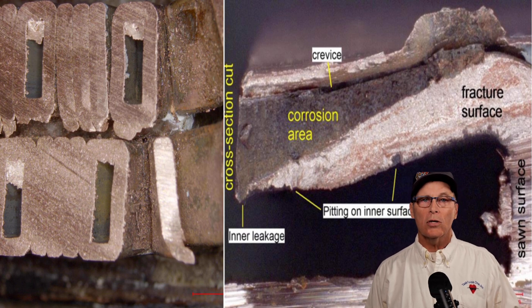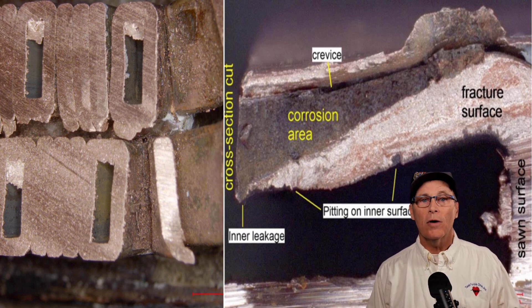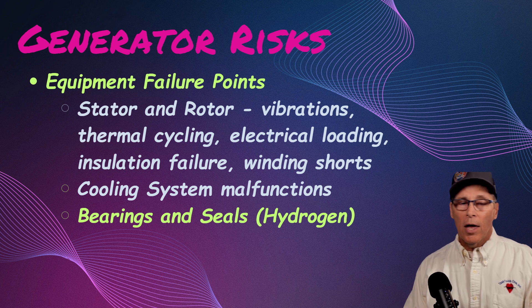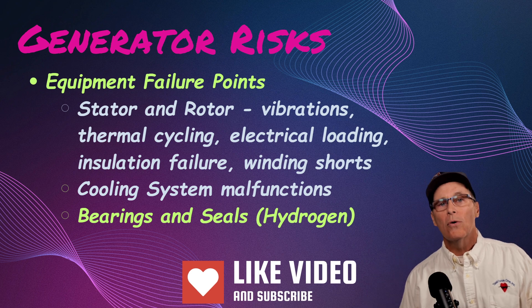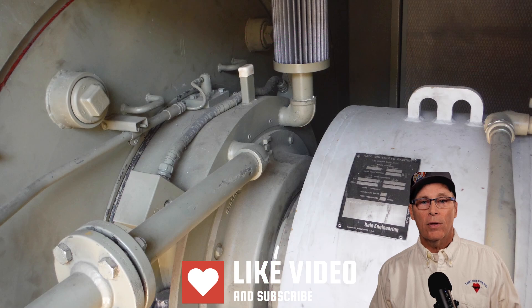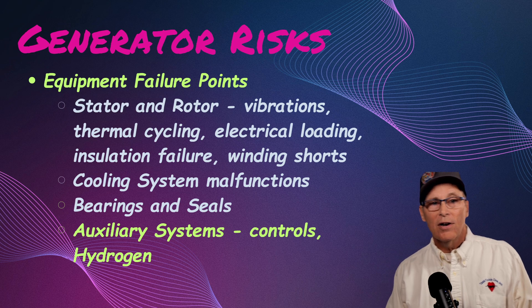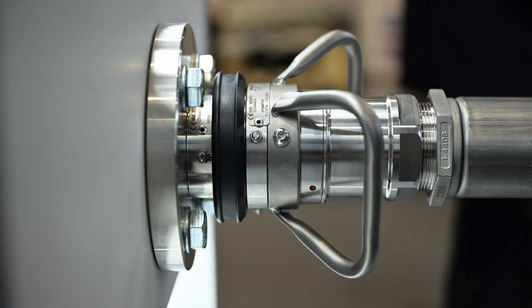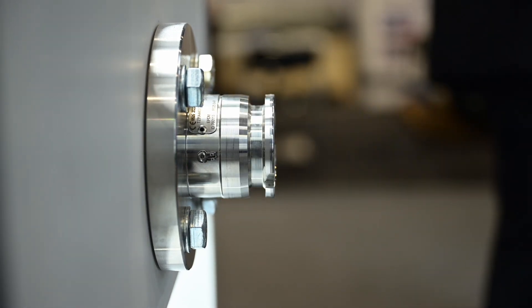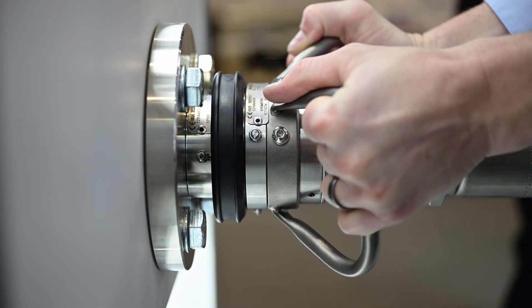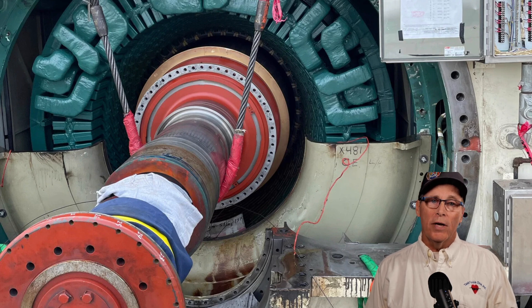Here's a close-up of the inside of stator bars from an investigation where we had hydrogen leaking due to crevice corrosion cracking. Remember — we have hydrogen in these machines, so we have to keep that seal oil flowing or we risk a fire. This is a close-up of the bearings on one of these machines. For auxiliary controls, you have a complete hydrogen system — you have to manage how you're adding hydrogen, monitoring it for leakage, and how often you're changing your bottles.